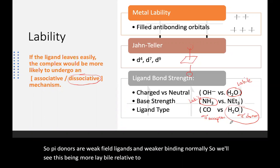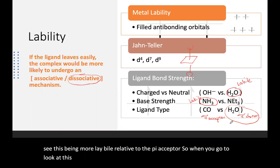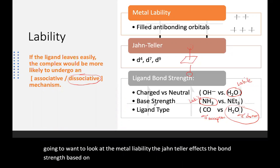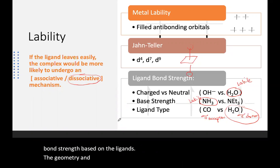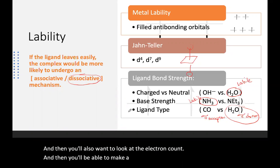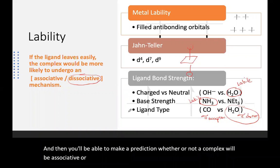When analyzing a complex, you'll need to take into account several factors: metal lability, the Jahn-Teller effect, bond strength based on the ligands, geometry and sterics, and electron count. Combining these, you'll be able to predict whether a complex will undergo associative or dissociative ligand exchange.